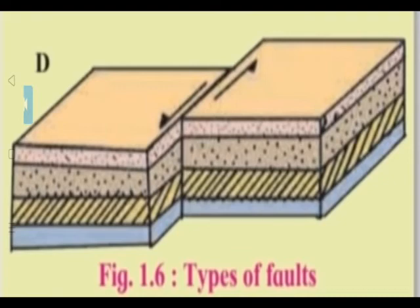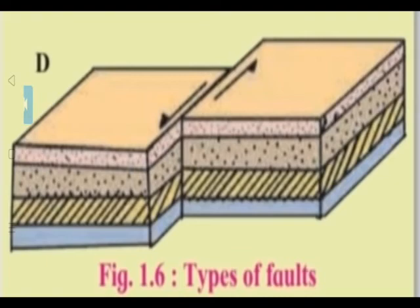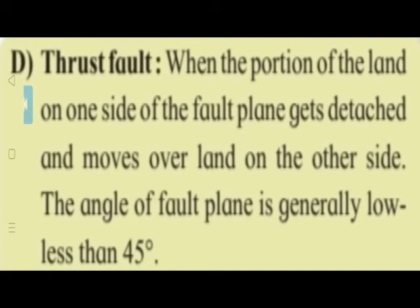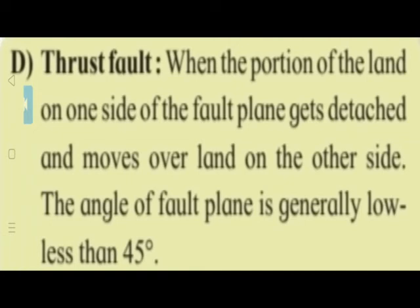Diagram D - thrust fault: when the portion of land on one side of the fault plane gets detached and moves over land on the other side. The angle of the fault plane is generally low - less than 45 degrees. Thrust fault means the fault plane is at an angle less than 45 degrees, and the land gets detached and moves over.